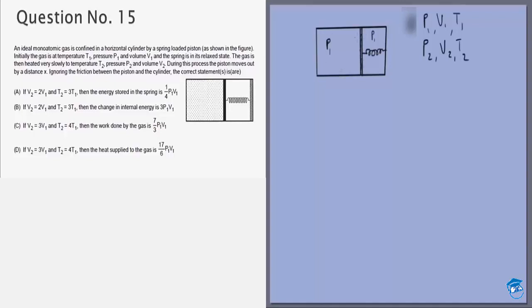Finally we heat it and it becomes P2, V2 and T2 and the spring gets compressed by a distance x. So spring is applying a force Kx towards the left. So the net force applied towards the left will be Kx plus P1A, let's say A is the area of cross section. And from this side there would be P2A.